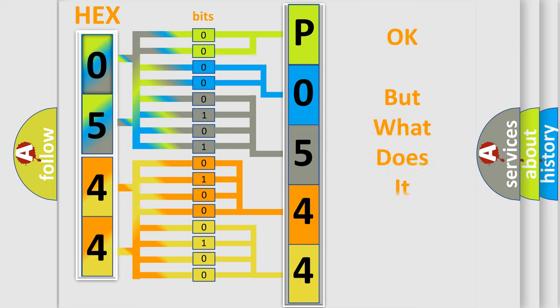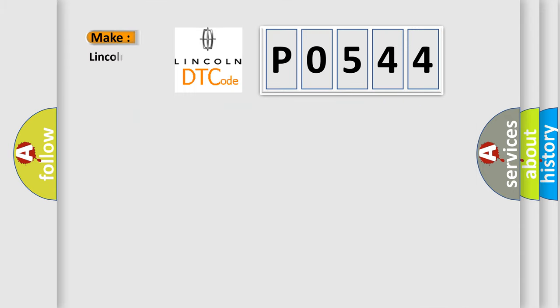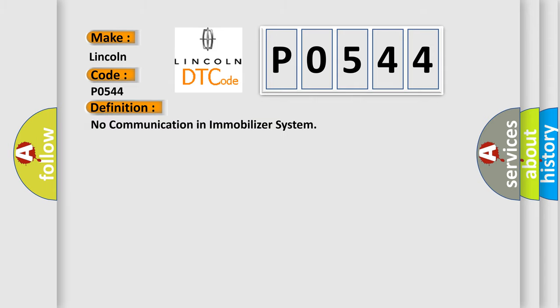The number itself does not make sense to us if we cannot assign information about what it actually expresses. So, what does the diagnostic trouble code P0544 interpret specifically for Lincoln car manufacturers? The basic definition is: No communication in an immobilizer system. Here is a short description of this DTC code.